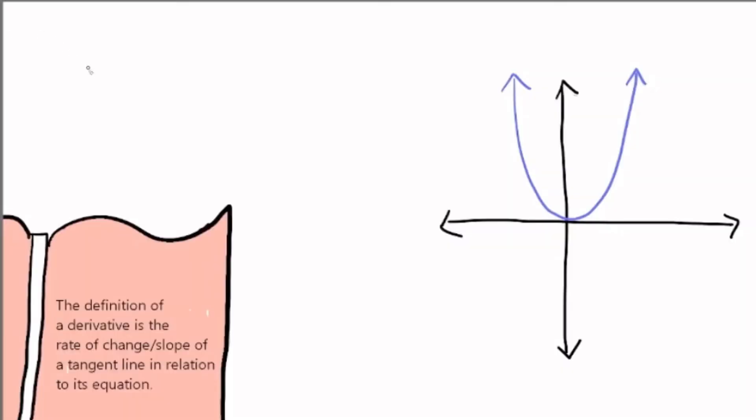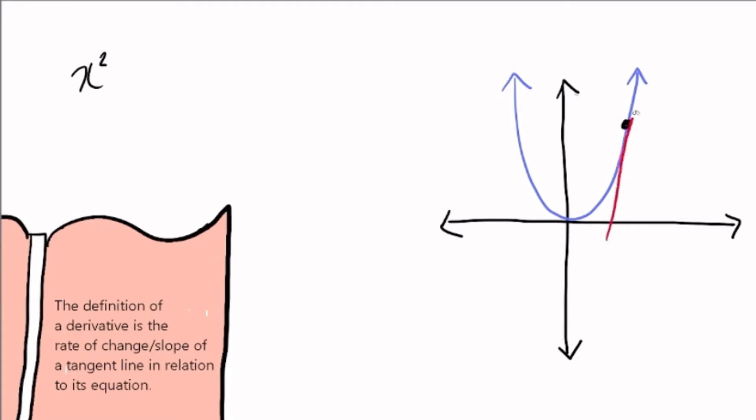Okay, so let's say that we have a hypothetical function slash curve in this case of x squared, which should look something like this. And so in x squared, let's draw a hypothetical tangent line in respect to x squared, which should look something like this. Okay, so the slope of this tangent line is essentially what the derivative gives us.